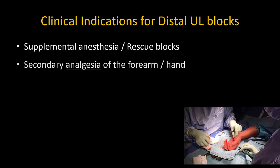Second, secondary or selective analgesia of the forearm or hand — for example, where short-acting local anesthetic is used for the brachial plexus block, and then long-acting local anesthetic is used in the distal blocks to provide postoperative analgesia.